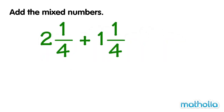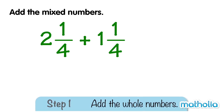Let's find 2 and a quarter plus 1 and a quarter. We can add the mixed numbers by following three steps.